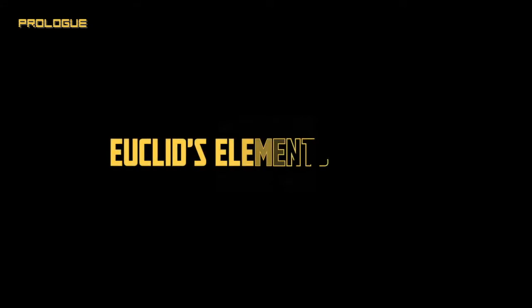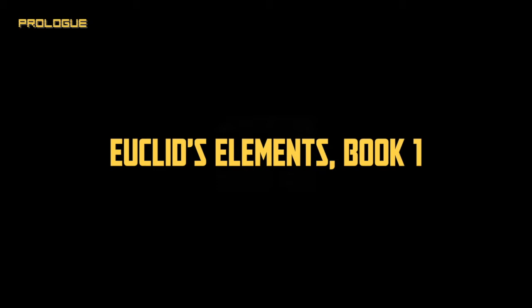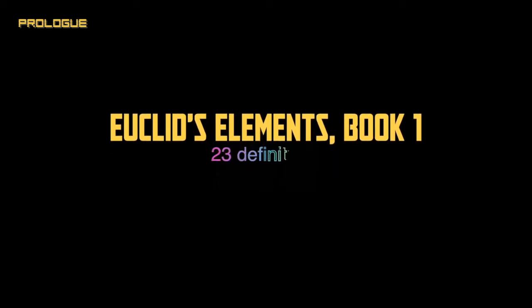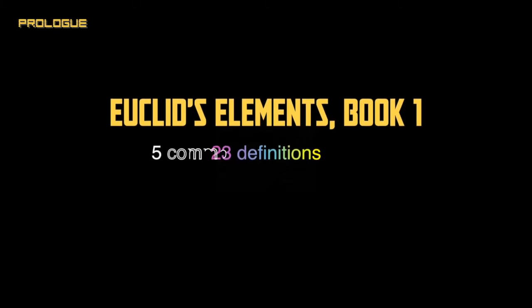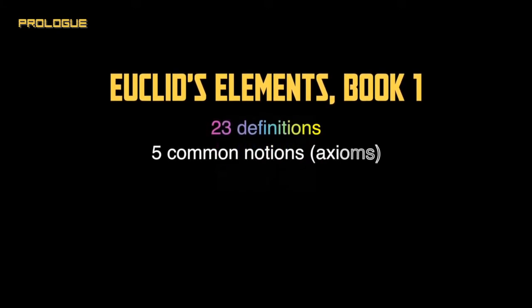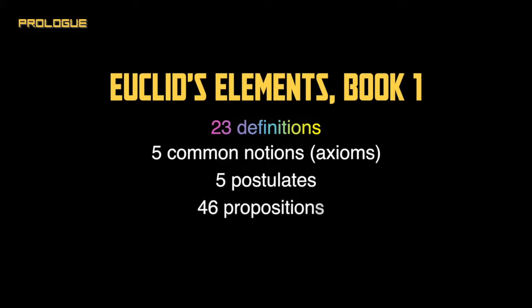The series to be discussed from this point forward covers the contents of Book 1 of Euclid's Elements. Euclidean geometry consists of 23 definitions that define plane figures such as points, lines, and triangles, and five common notions and five postulates as basic principles. It contains 46 propositions, which are the main contents of this series. All proofs and solutions will be solved using only these definitions, postulates, axioms, and previously proven propositions.